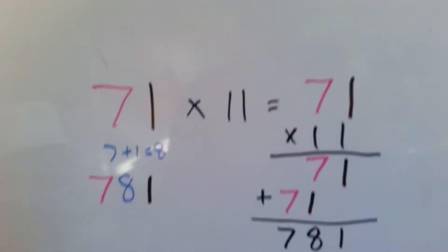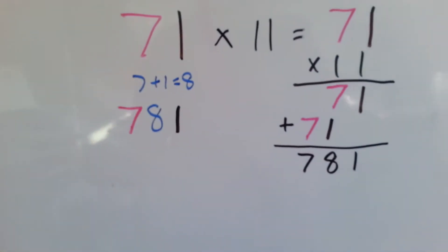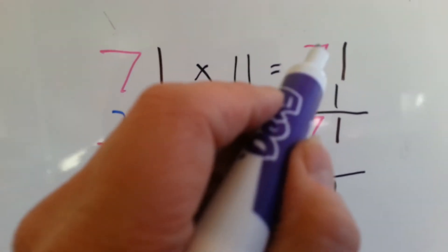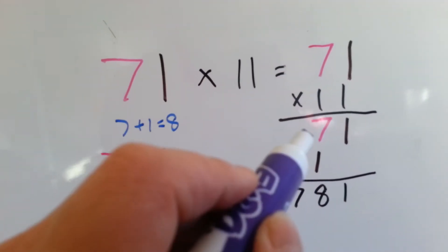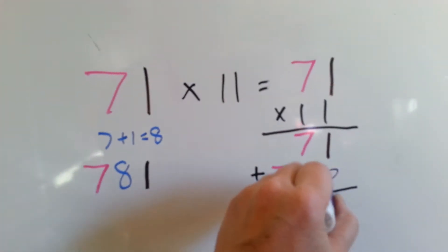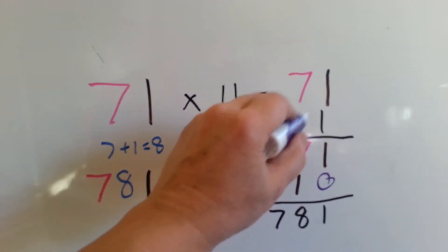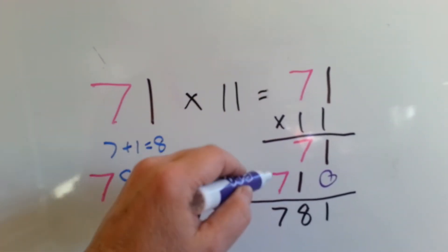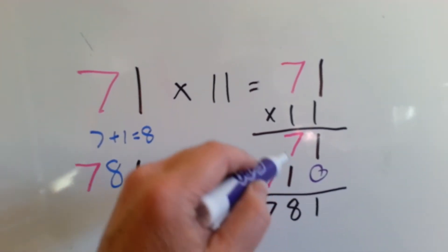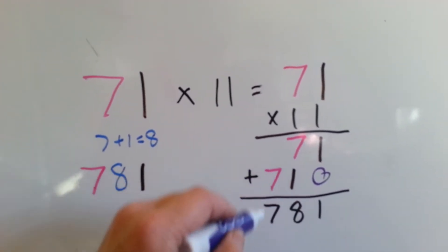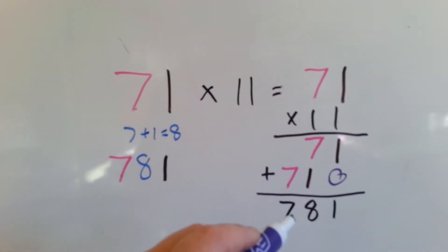So here I did it again with 71 times 11. 71 times 11. 1 times 1 is 1. 1 times 7 is 7. Put our placeholder. 1 times 1 is 1, and 1 times 7 is 7. Then we add them all up. 1 plus 0 is 1. 7 plus 1 is 8, and we drop down the 7, 781.